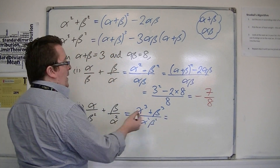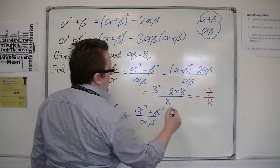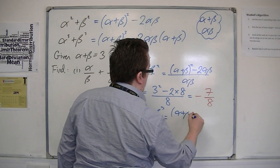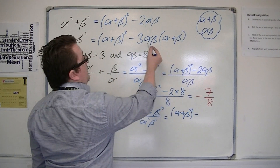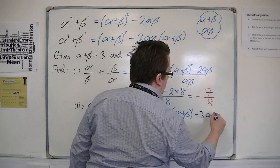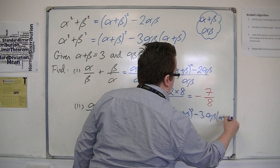Alpha cubed plus beta cubed is alpha plus beta, all cubed, take away 3 alpha beta times alpha plus beta.